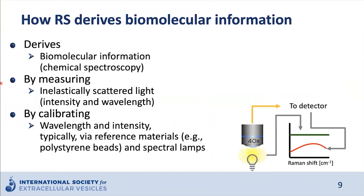To recap: Raman spectroscopy derives biomolecular information of the interrogated sample by measuring inelastically scattered light to form a spectrum plotting intensity versus wavelength, or energy of the scattered photons. To reproducibly collect such information in a calibrated manner, you have to calibrate both the wavelength — usually by using a known reference material like polystyrene beads or toluene — and also the intensity, usually calibrated by the use of NIST-traceable spectral lamps, which themselves have to be calibrated on an annual basis.